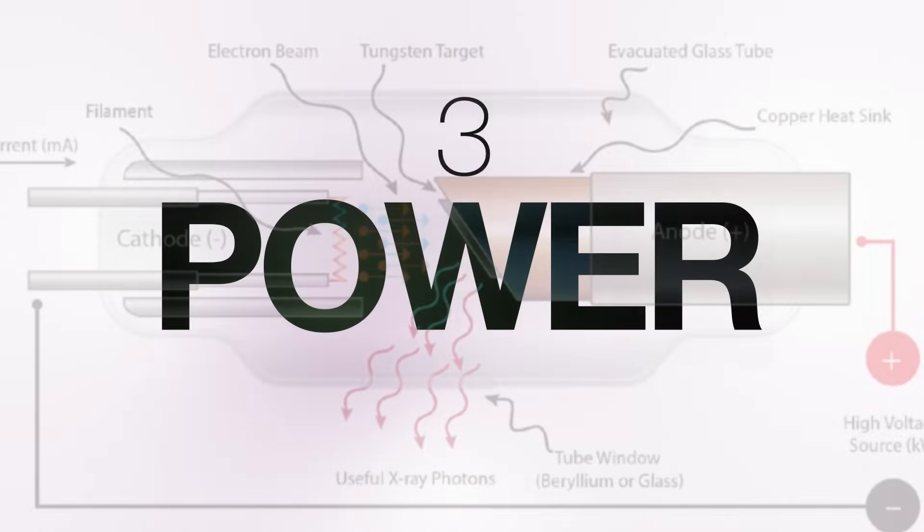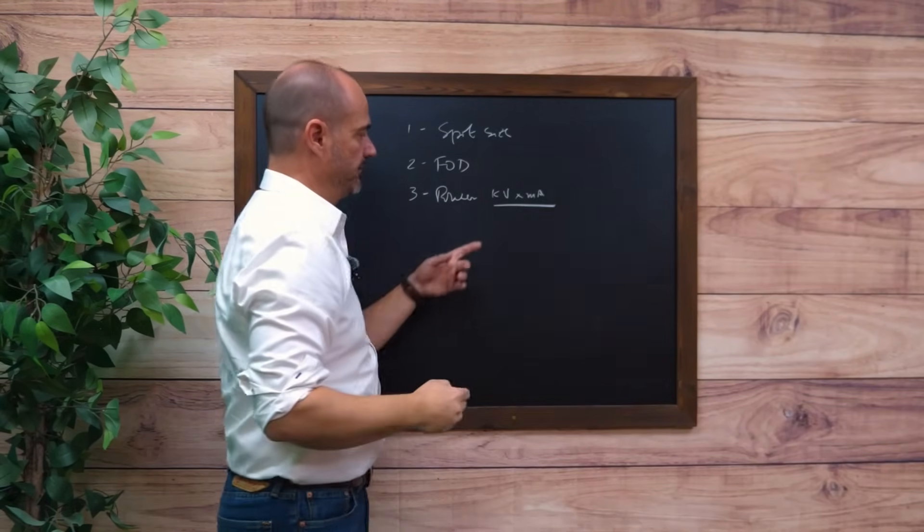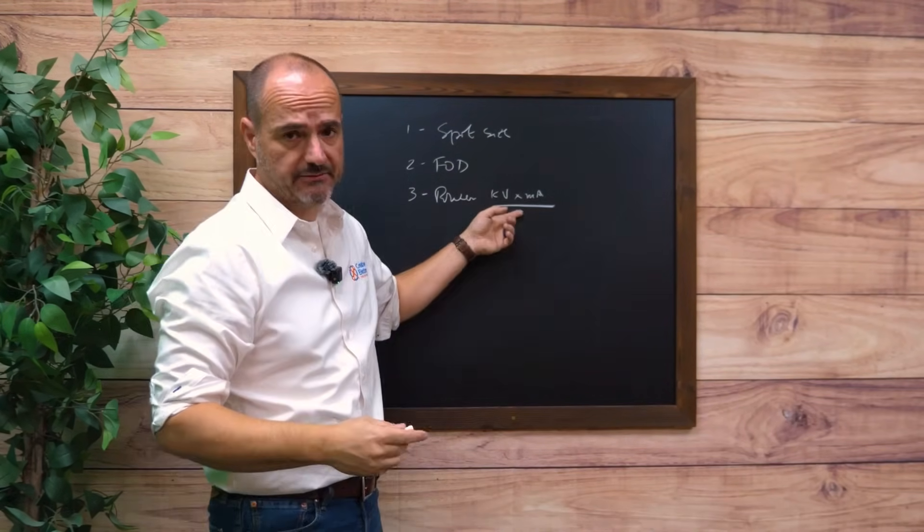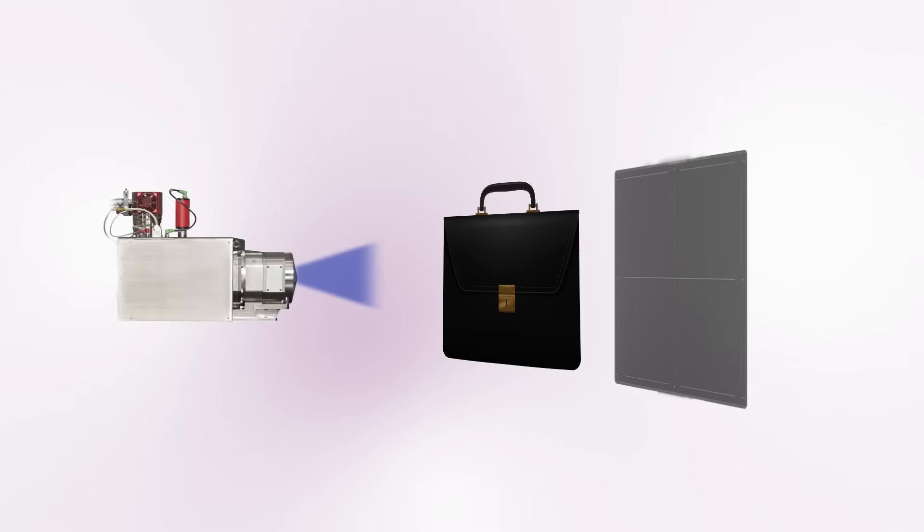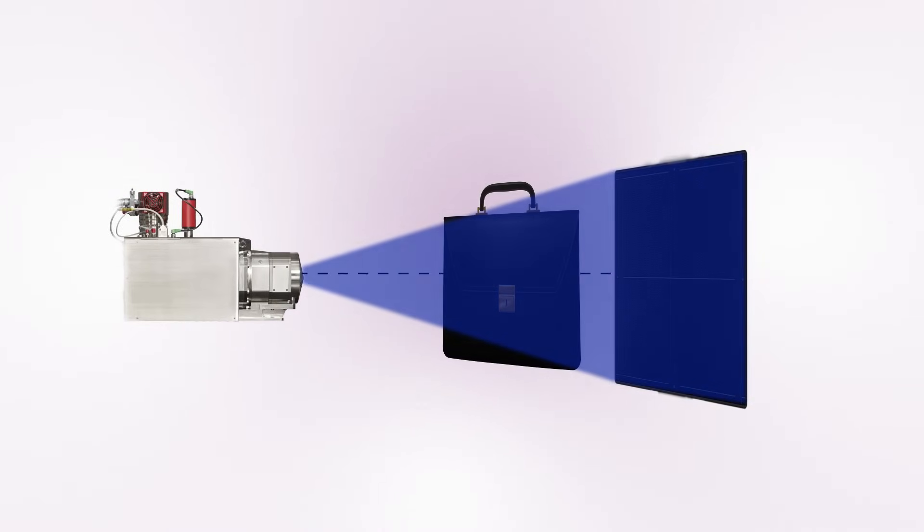Third is power. It's kV times mA. What is the total power of the x-ray source? The more power you have, the deeper penetration and the higher diversity of samples you can image.